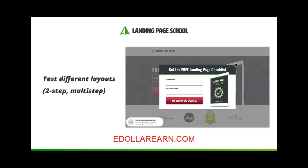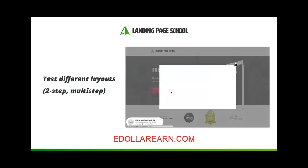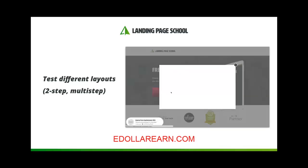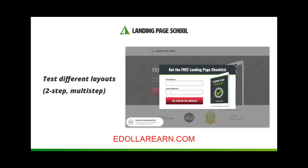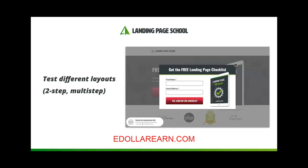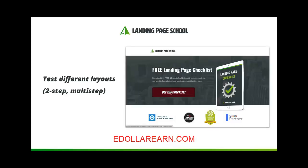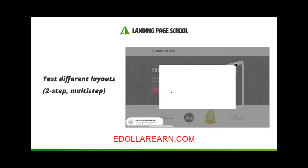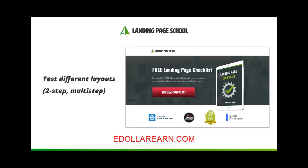Tip number four is to test out different layouts for your form. One of my favorite techniques is the two-step opt-in process: instead of having all the form fields visible at the top of your page, just have a button. When someone clicks that button, they then see the form — either in a lightbox or below the page. This gives you more room in your hero section, changes the dynamic from taking information to giving information, and helps people take action because it's a smaller initial commitment. You're simply asking them to click a button, and only after they've clicked do they see the form — and by this point, since they've already begun taking action, they're more likely to complete it.